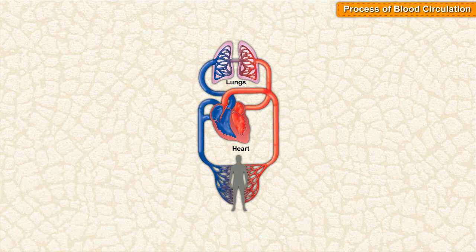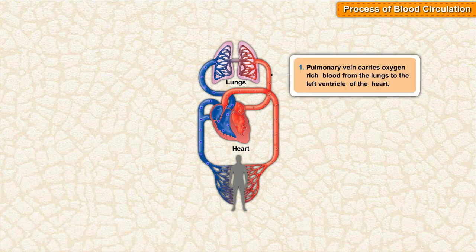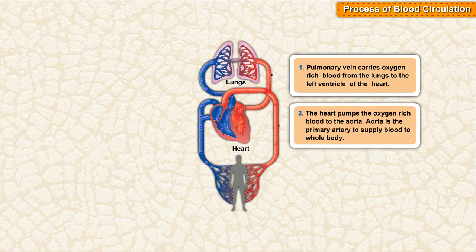Lungs, heart. The pulmonary vein carries oxygen-rich blood from the lungs to the left ventricle of the heart. The heart then pumps the oxygen-rich blood to the aorta. The aorta is the primary artery that supplies blood to the whole body.